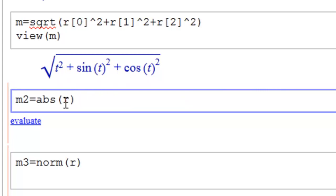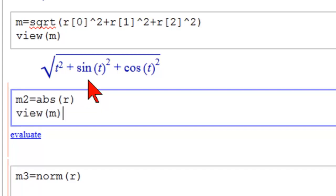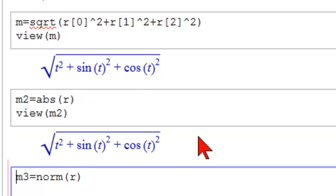We could use the ready to use command for magnitude, absolute value. Let's put a view command in there. So let's evaluate that and see what we get. Notice that by hand and the absolute value command give us exactly the same result.